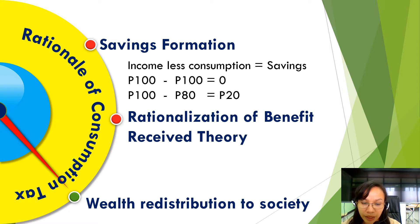See the example presented in my PowerPoint. For income less consumption equals savings. For example number one: income of 100 pesos less 100 pesos consumption equals zero savings. For example number two: income of 100 pesos less consumption of 80 pesos equals 20 pesos savings. The government promotes savings, which is why the higher consumption consumed, the higher the tax imposed on a certain taxpayer.